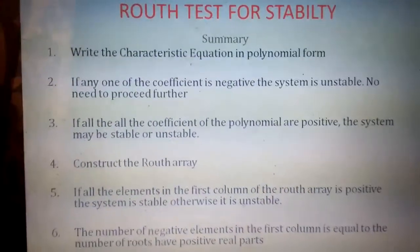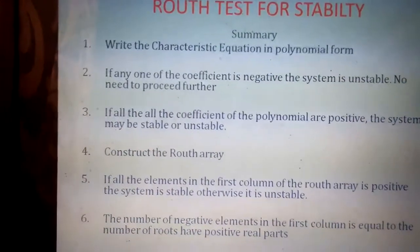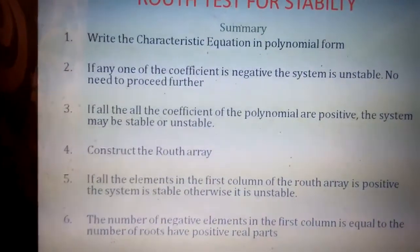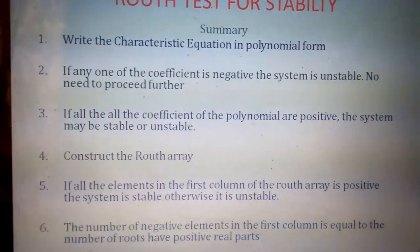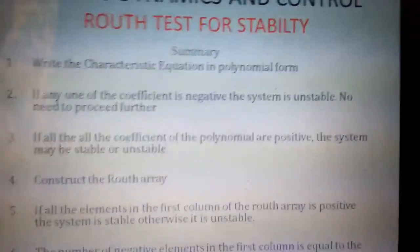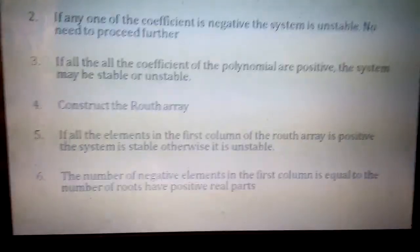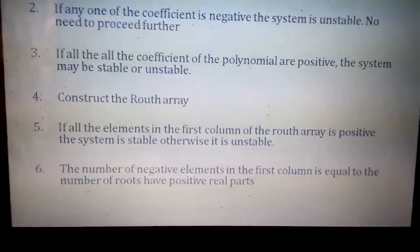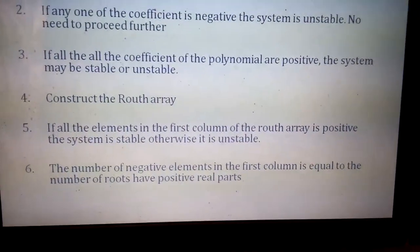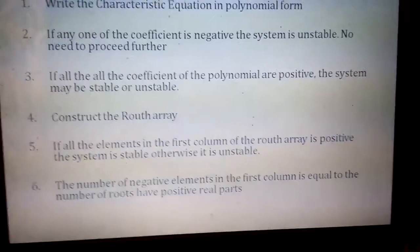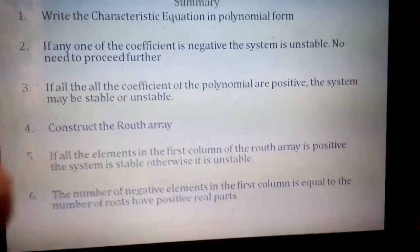In summary: write the characteristic equation in polynomial form. If any one of the coefficients is negative, the system is unstable — no need to proceed further. If all the coefficients of the polynomial are positive, construct the Routh array. The number of negative signs in the first column represents the number of roots which lie on the right half of the complex plane.